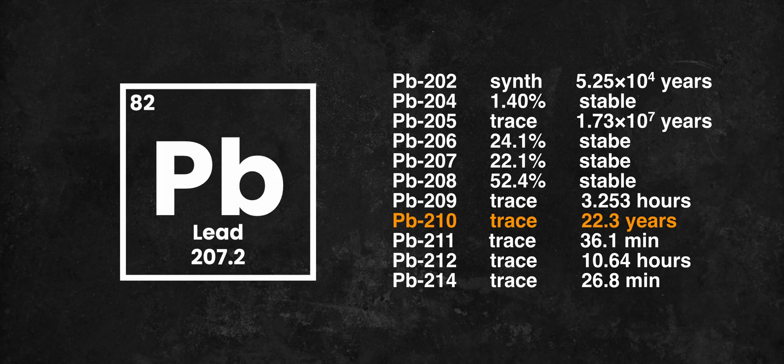Since lead-210 is the only radon daughter isotope with long half-life, it can accumulate and build up over time, especially in areas where high levels of radon gas are present.